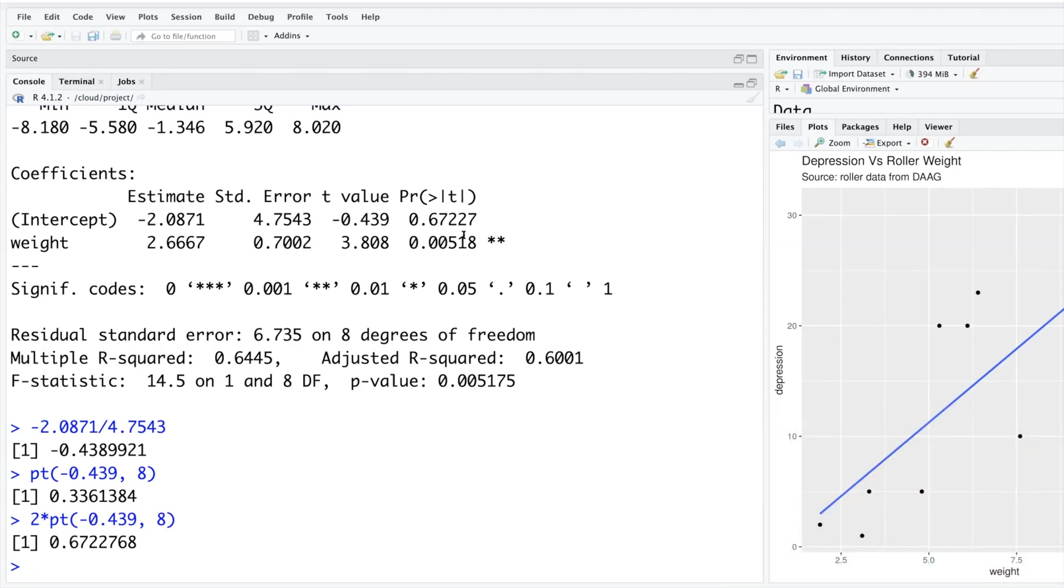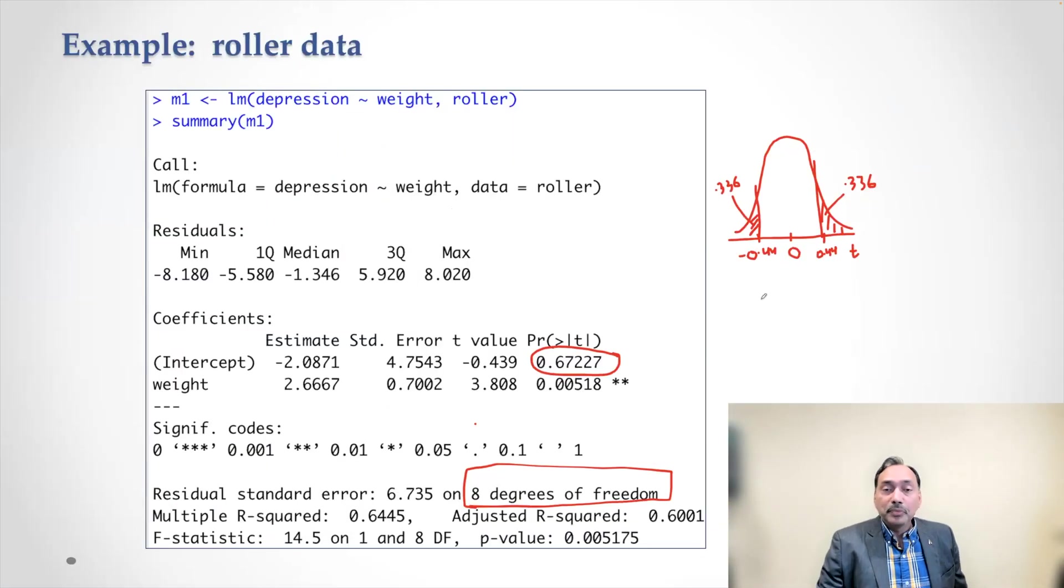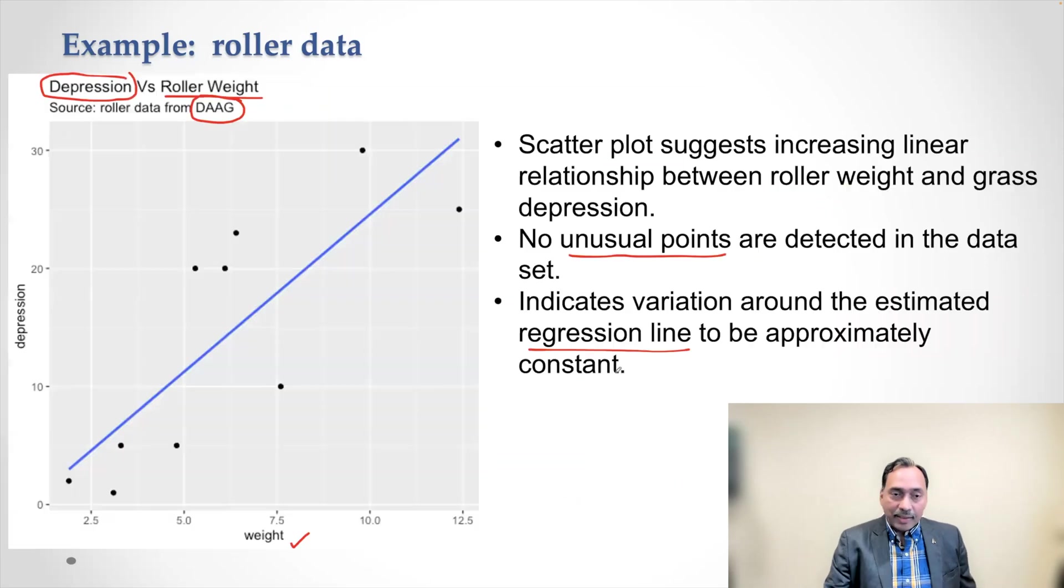Student: Can I ask, can you repeat one more time, what is the meaning of t-value? I mean, you show how to calculate it, but can you repeat what is the meaning in the equation that we are working here? Professor: The purpose of using t-distribution here is ultimately to say with some level of confidence whether this model is really useful or not. Whether weight is playing any significant role in the determination of depression depth.